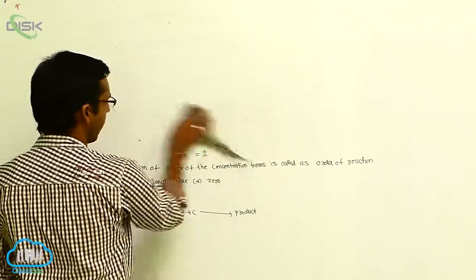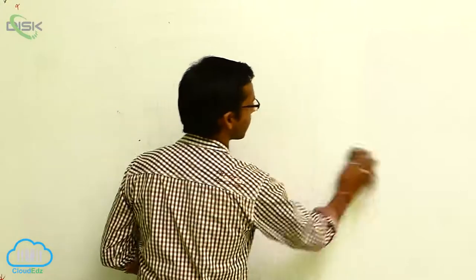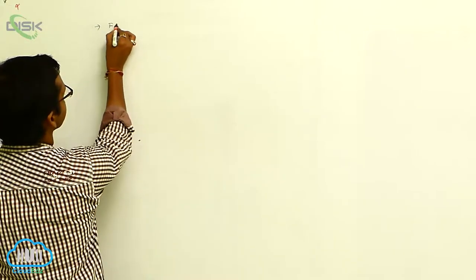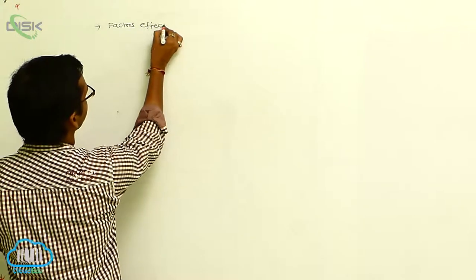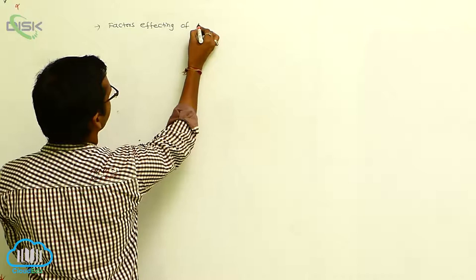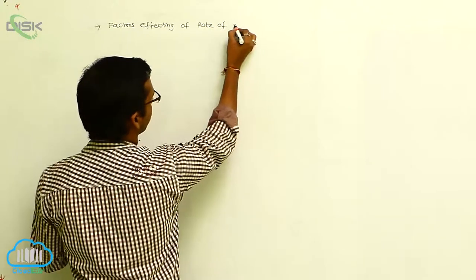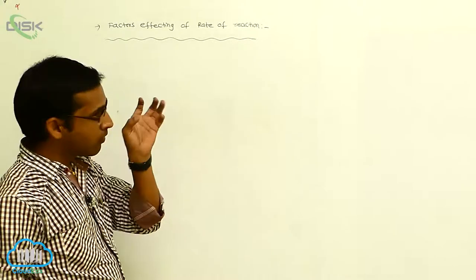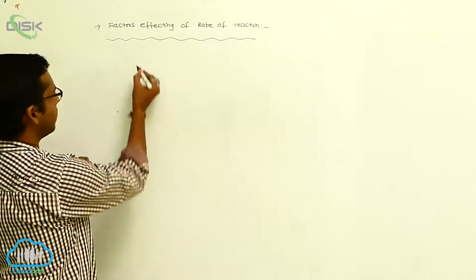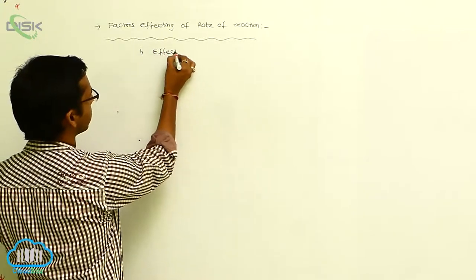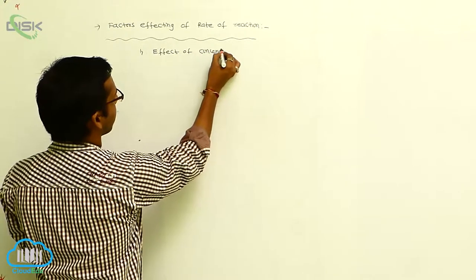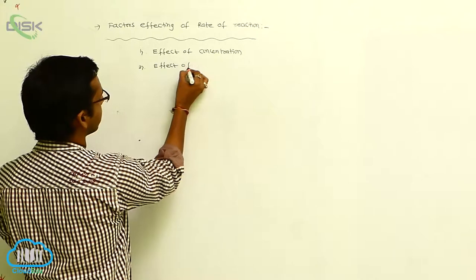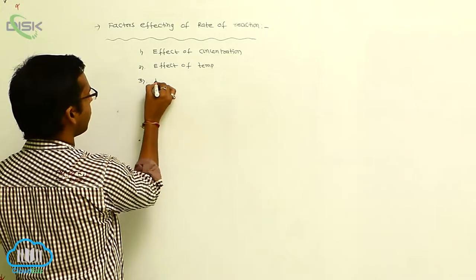These are the differences between order of reaction and molecularity. We already discussed rate of reaction — the change in concentration of reactant or product is called rate of reaction. Now we discuss the factors affecting rate of reaction. The first factor is effect of concentration, the second is effect of temperature, and the third is effect of catalyst.